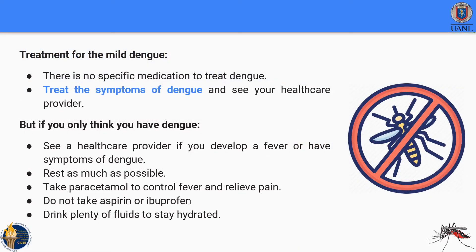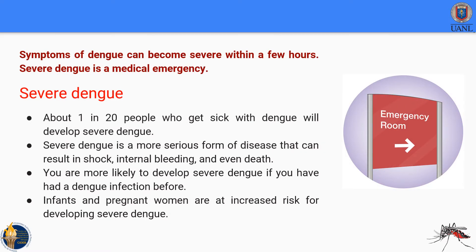There is no specific medication to treat dengue, but there is medication to treat its symptoms. If you think you have dengue, consider the following tips: see a healthcare provider if you develop a fever or symptoms of dengue; rest as much as possible; take paracetamol to control fever and relieve pain; do not take aspirin or ibuprofen; and drink plenty of fluids to stay hydrated. Symptoms can become severe within a few hours — severe dengue is a medical emergency.